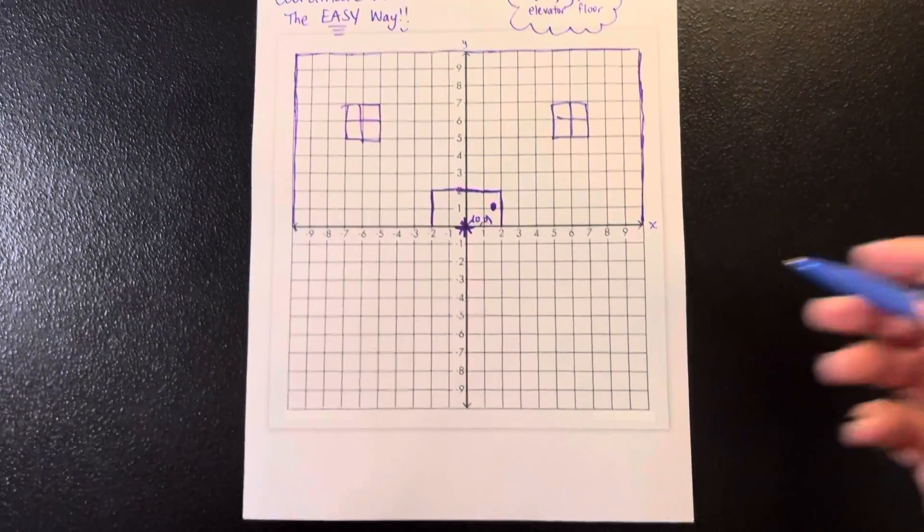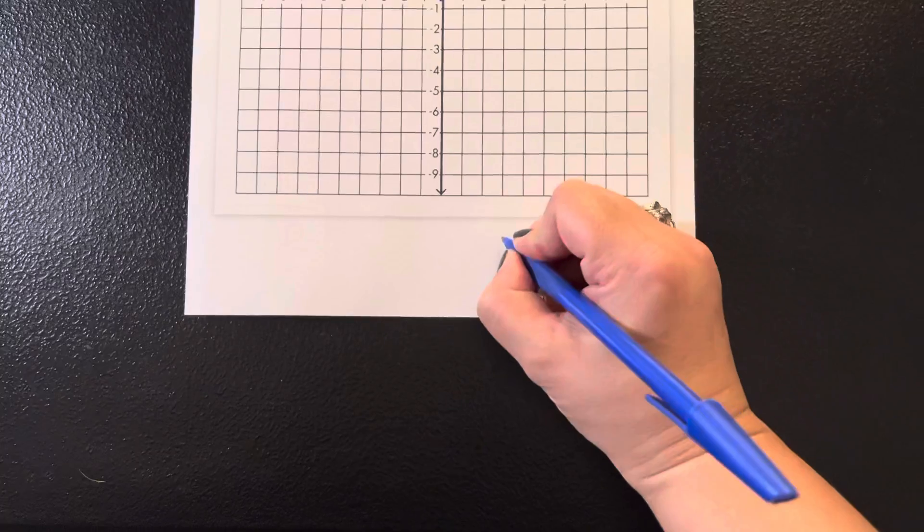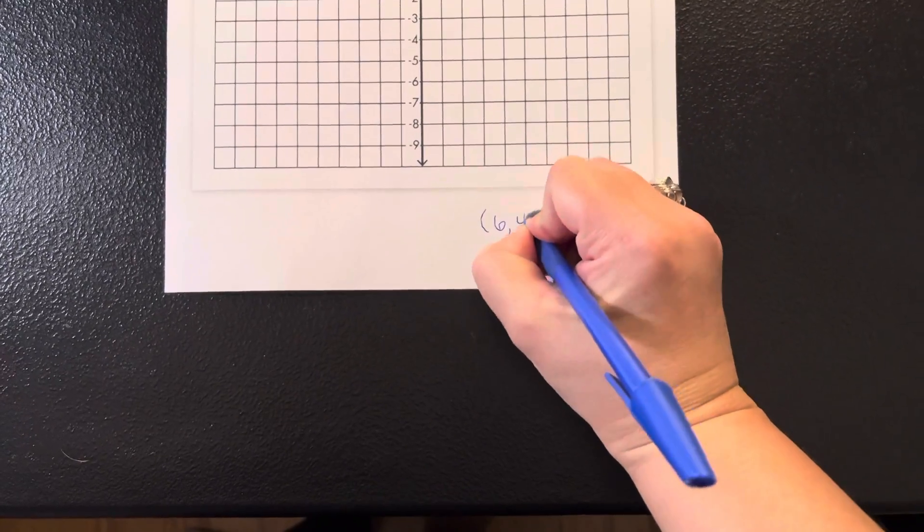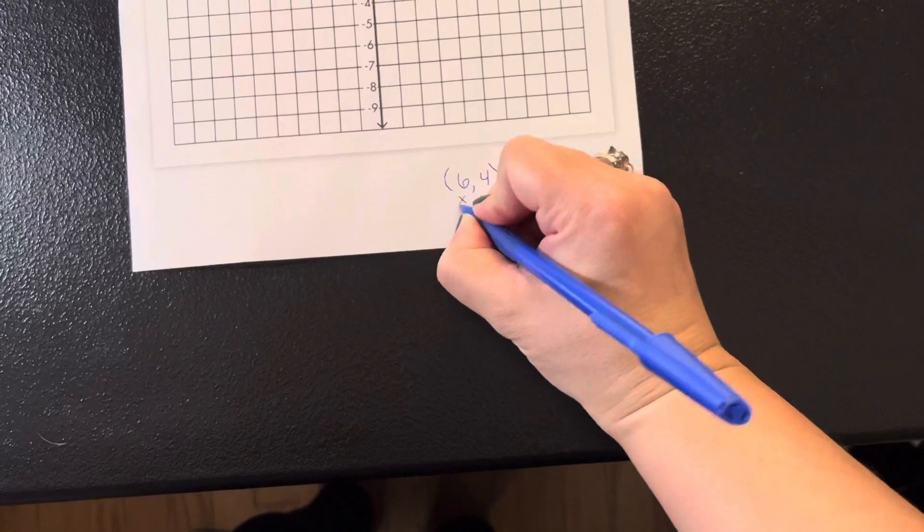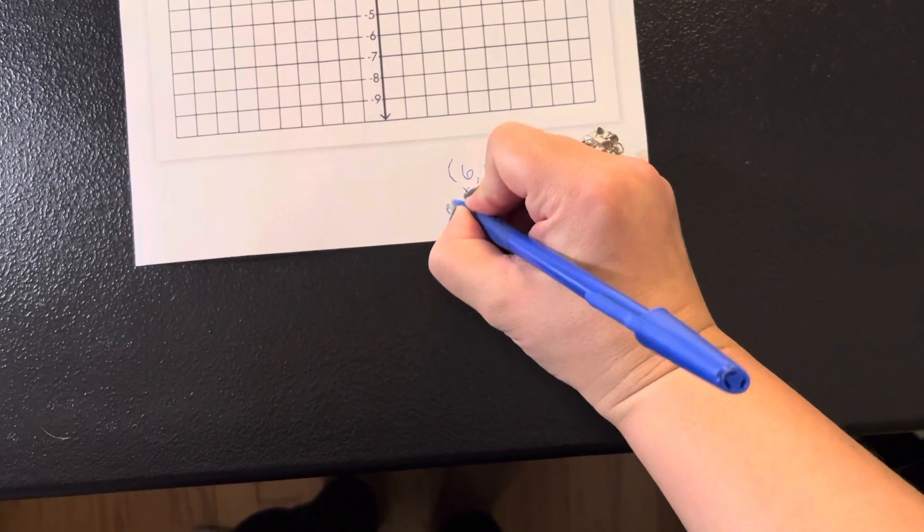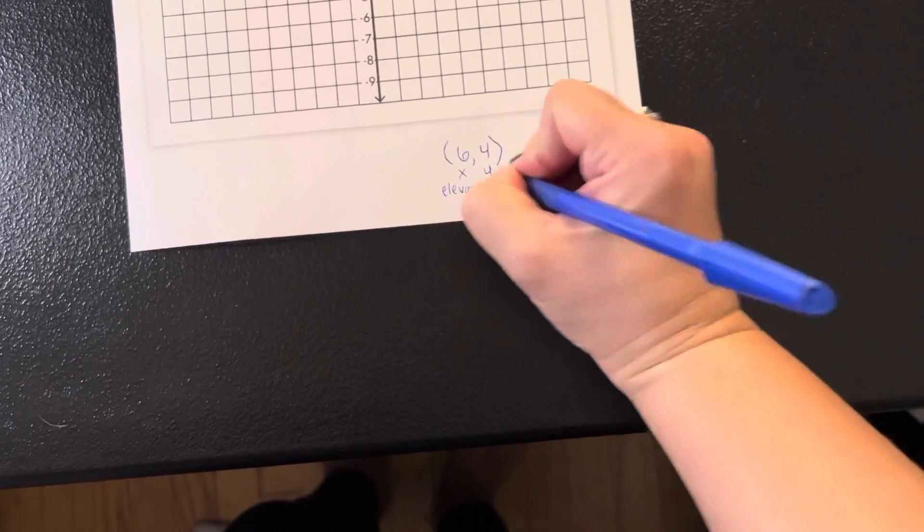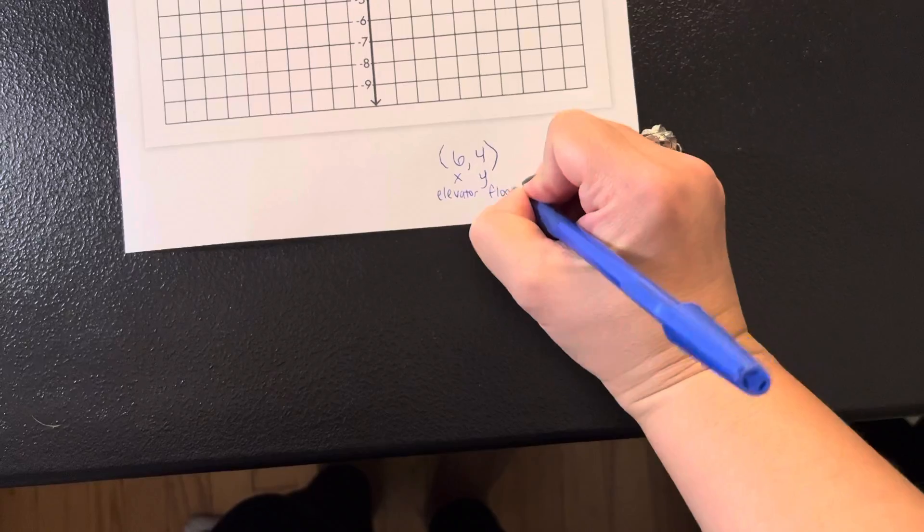So I'll show you with an example here. Let's look at point six, four. Let's start with kind of an easy one. So we have the x-coordinate, the y-coordinate. I know first is my elevator, then my floor.